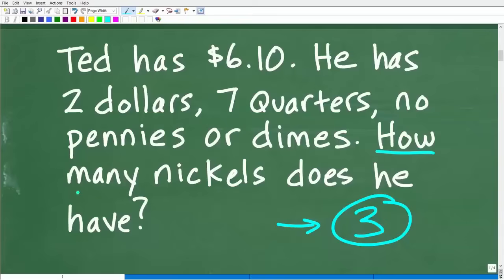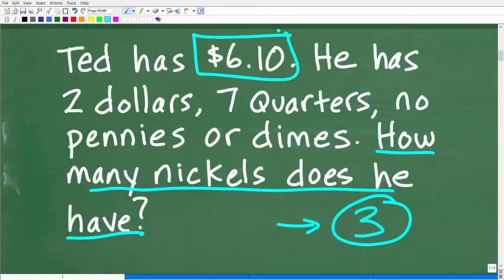And to really understand what the question is. The question here is, how many nickels does Ted have out of this $6.10? Now, of that $6.10, he has 2 dollars, 7 quarters. So we're dealing with bills and coins. This is basically a money math word problem.